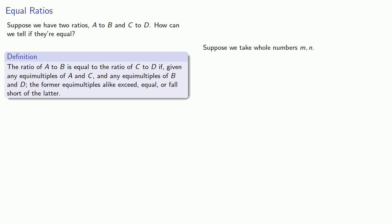Suppose we take whole numbers M and N. These are going to be our multipliers. So these equal multiples of A and C, I'm going to take MA and MC. Again, a bunch of copies of A and an equal number of copies of C. I'm also going to find NB and ND. Again, equal multiples of B and D.